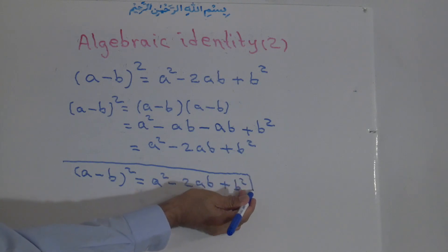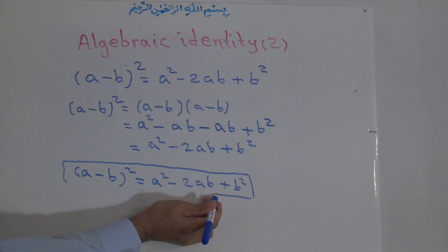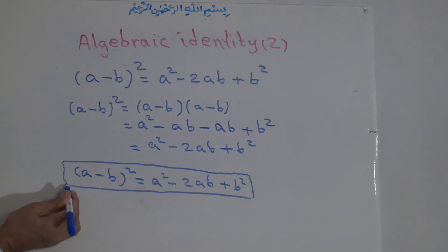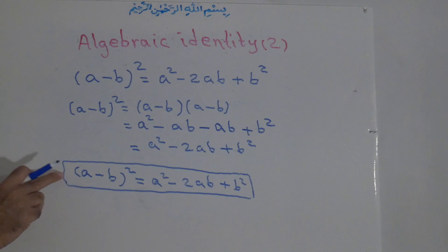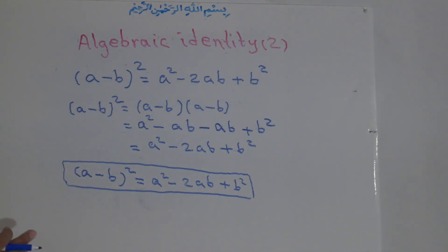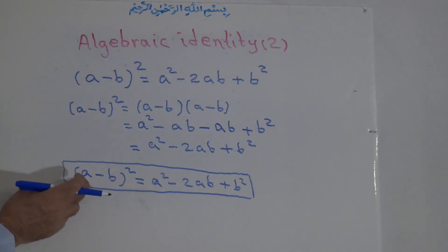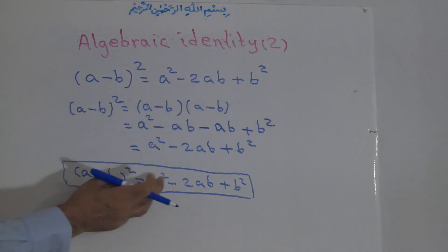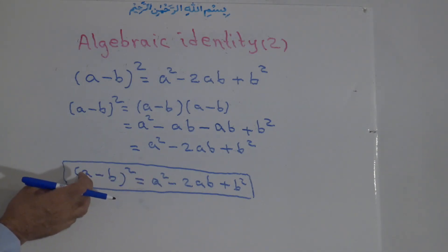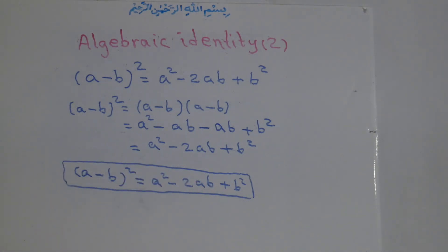The difference of two numbers — a binomial — squared is equal to: the first term to the power of two, minus twice the first term times the second term, plus the second term to the power of two.